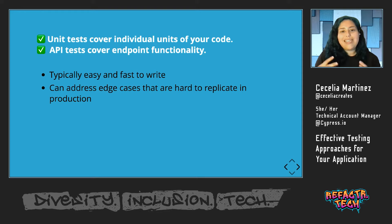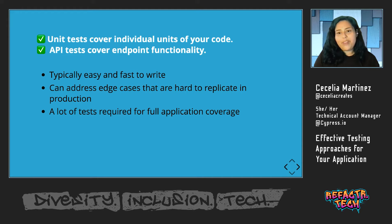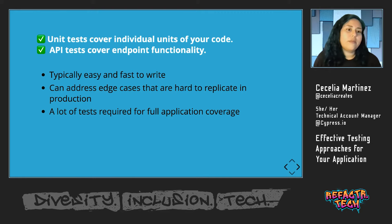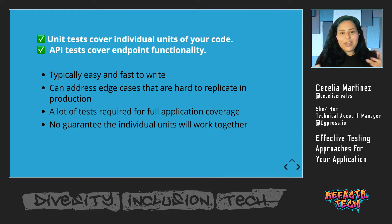Unit tests can also be used to address edge cases that are hard to replicate in production or in your UI. However, a lot of tests are required to get full application coverage. If a unit test covers an individual unit, and you have thousands and thousands of units across your application code base, then you're going to need thousands and thousands of tests to get the coverage that you want. Additionally, there's not necessarily any guarantee that the individual units will work together or result in a functioning application — you can have all the individual pieces working independently, but when you put them together, it could all fall apart.